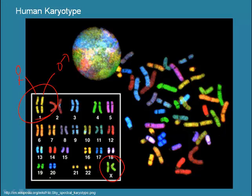The unnumbered pair is the sex-determining pair. Since there are two X chromosomes, this is a female karyotype. If it was a male karyotype, we would have a regular-sized X chromosome and a smaller Y chromosome, which would be lacking some of the genes that the X chromosome carries. This is the reason why there are genetic disorders that are linked to being male — we call this sex linkage.